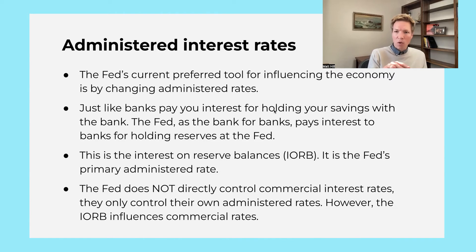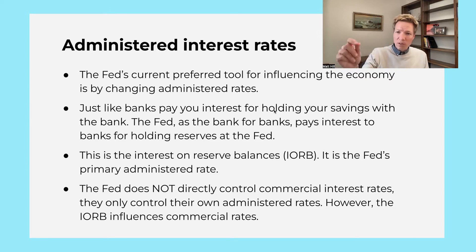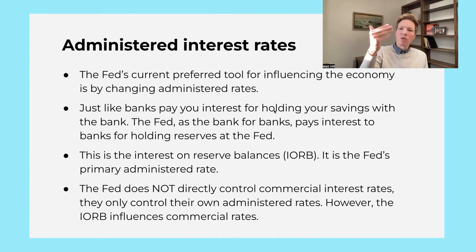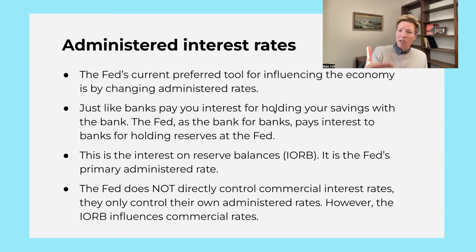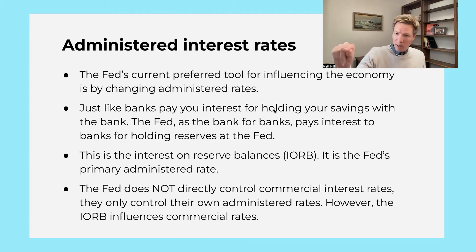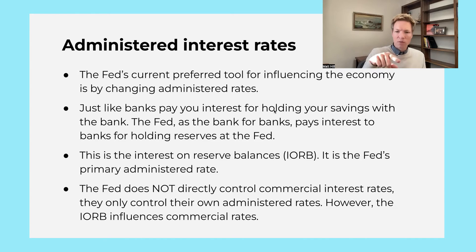It's important to note the Fed doesn't directly control mortgage rates, or auto loan rates, or the Fed funds rate — the rate banks lend to each other. They don't control those rates directly. They just control their administered rates, the primary one being the interest they're going to pay on reserve balances — the interest they're going to pay to banks for holding reserves at the Fed. That rate will be correlated with all the other rates, but the Fed doesn't directly move the mortgage rate up or down. They move their rates — the interest on reserve balances.